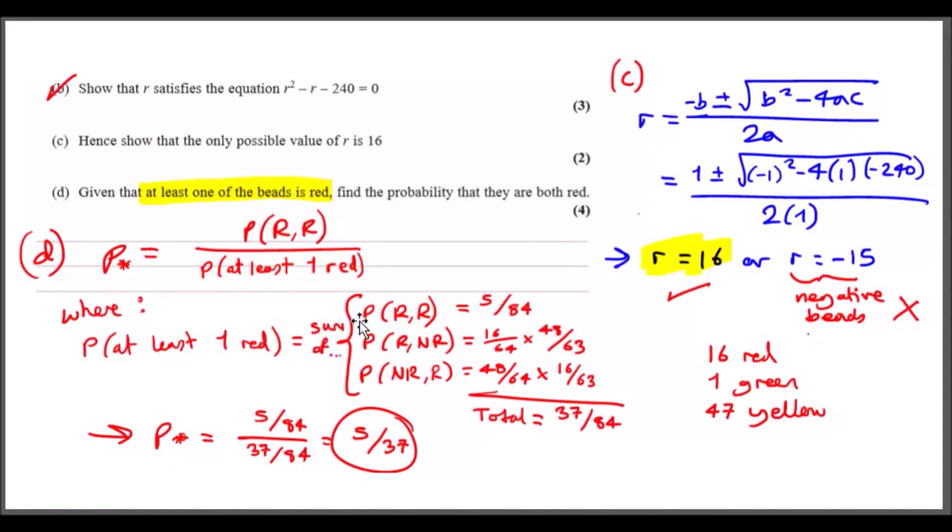At least one red can be made of: probability of getting red-red both times, the first one could have been red and the second one not red, or you could have not got red the first time but eventually got red the second time. These are the three options you could have got. Getting at least one red means it could be any of these three, so we have to add them up.